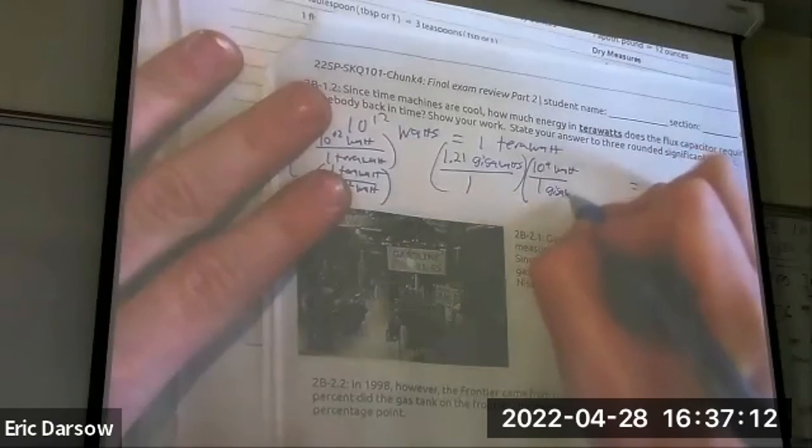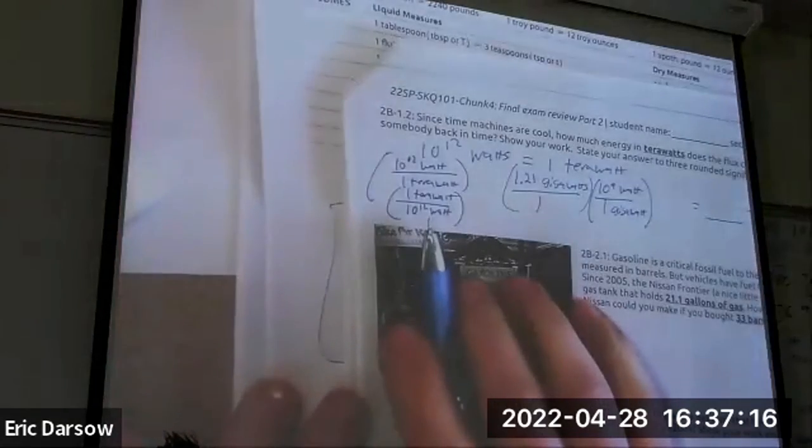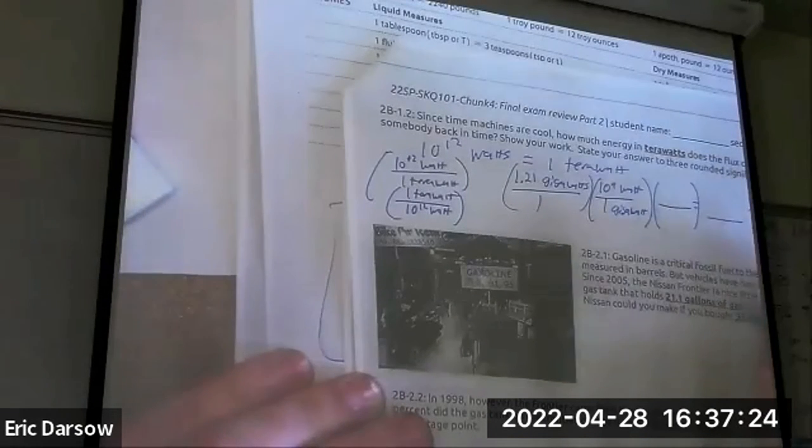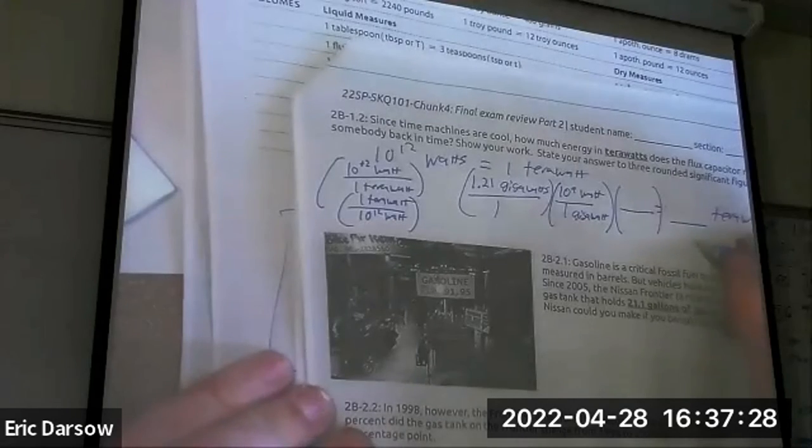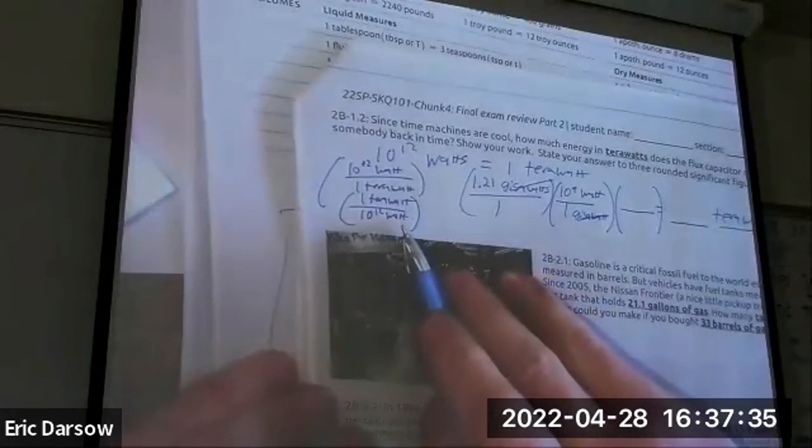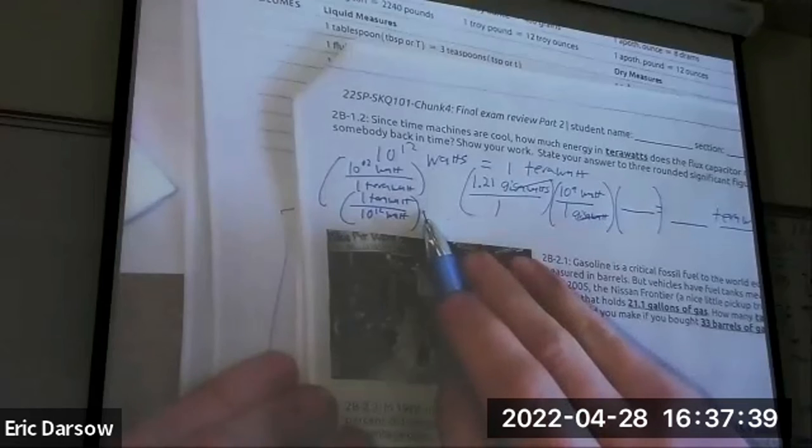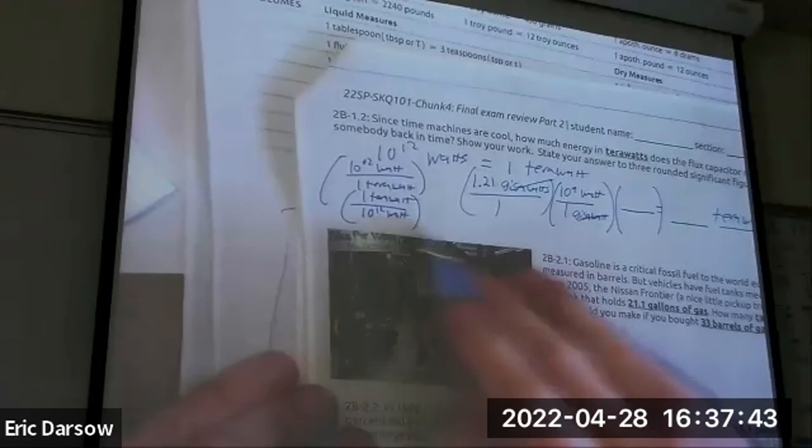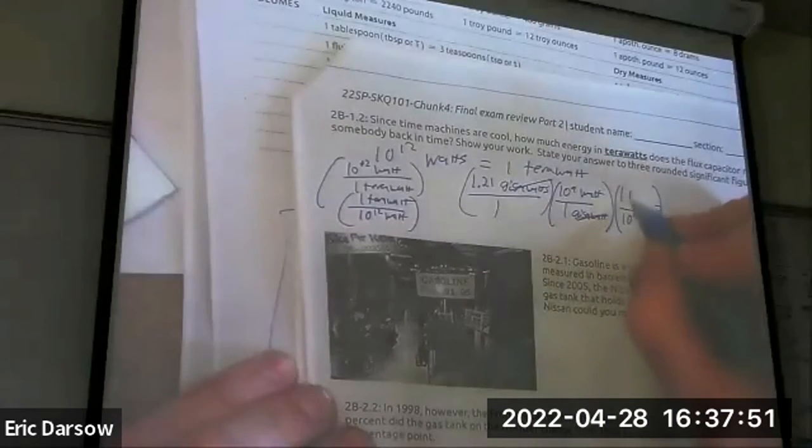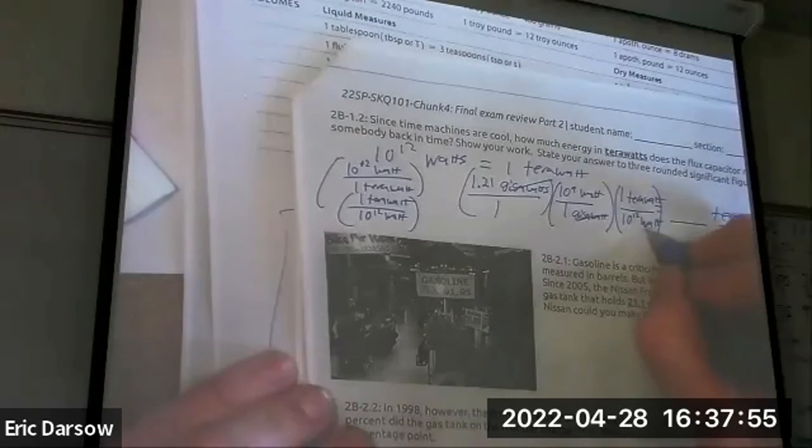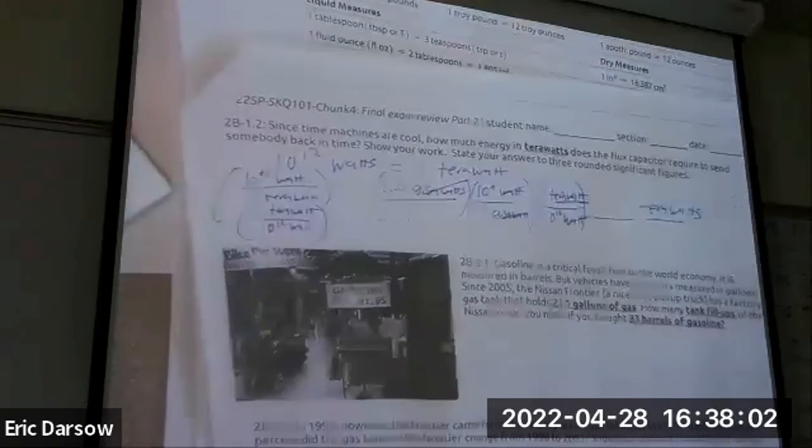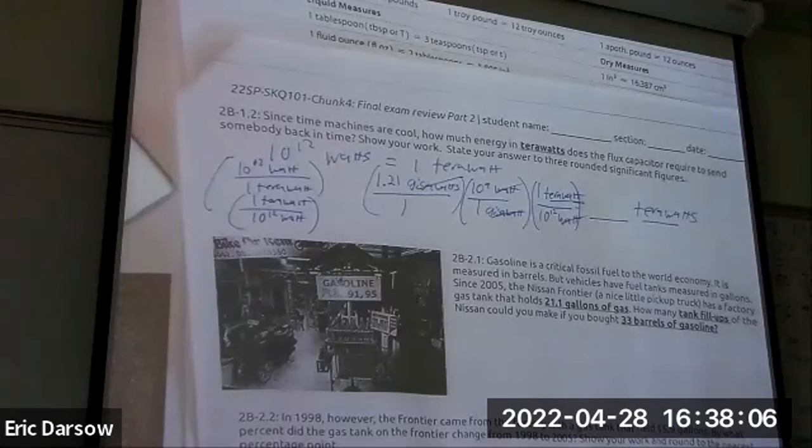So 1.21 gigawatts times 10 to the 9th watts over 1 gigawatt. This is handy because now we have our watts and we can pick up our terawatts now. Which order am I going to put this? This cancels, I'm left with watts, but I want terawatts. I need watts on the bottom. I want watts to cancel with my upper watts. So 10 to the 12th watts is one terawatt. I'm left with exactly what I want. It's like math. It's so linear. So concrete.